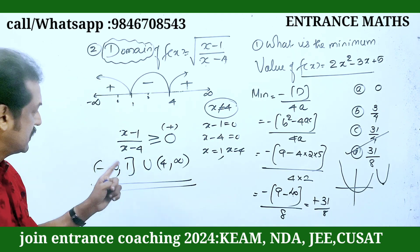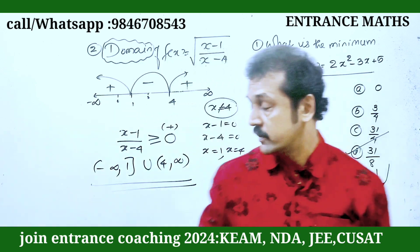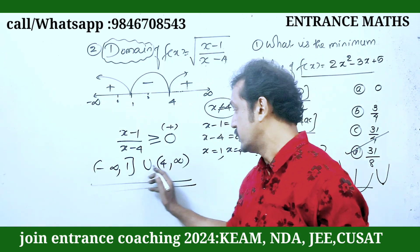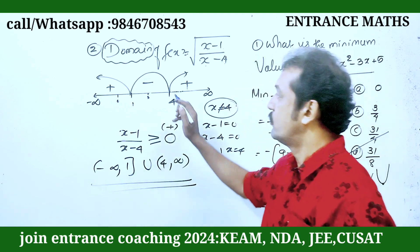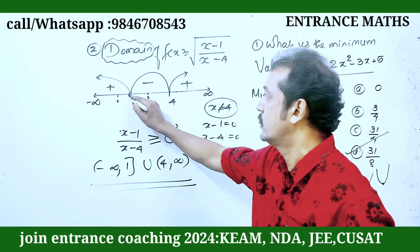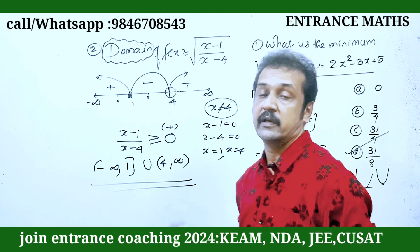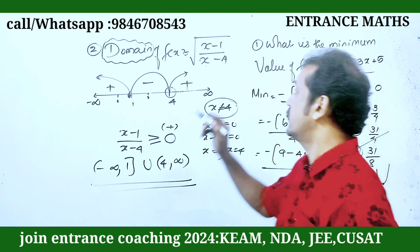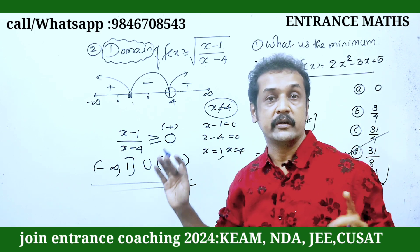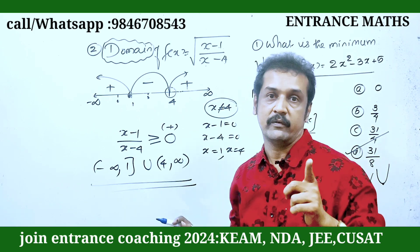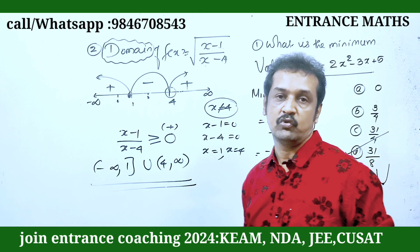The answer is positive. I use a simple bracket here. At x equals 1, the numerator is 0, so that value is included. At x equals 4, the denominator is 0, so that value is excluded — use an open bracket there.